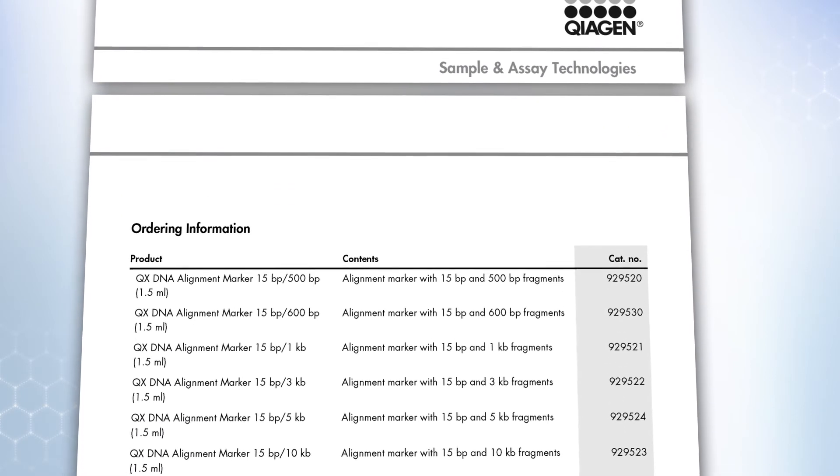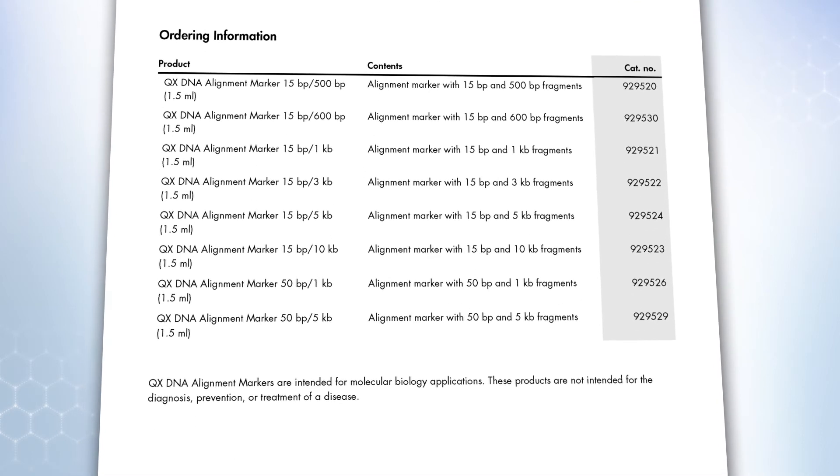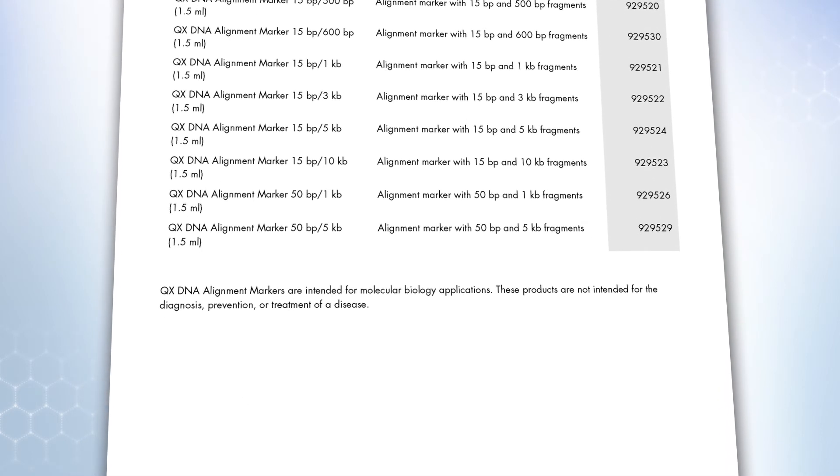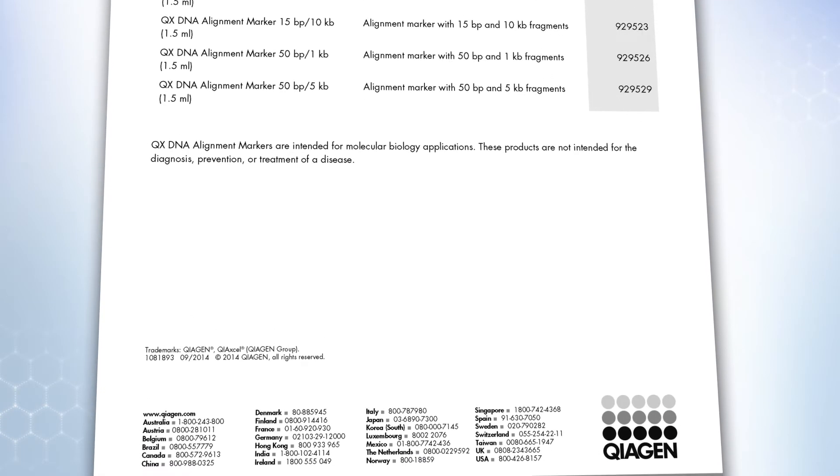For DNA applications, the alignment marker contains an upper and lower fragment of known size. For RNA applications, the RNA alignment marker that is included in the kit contains a single 15 base fragment.